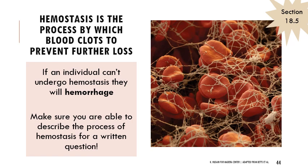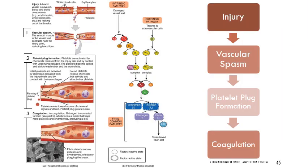Hemostasis is the process of clotting. Without it, you hemorrhage and lose blood dangerously — conditions like hemophilia, where you can't clot, can be fatal from seemingly minor wounds. The general steps are: an injury occurs, there's a vascular spasm, a platelet plug forms, and then coagulation occurs. We'll walk through vascular spasm, platelet plug formation, coagulation, and the factors that mediate all of this.